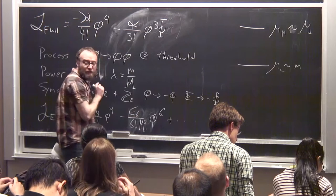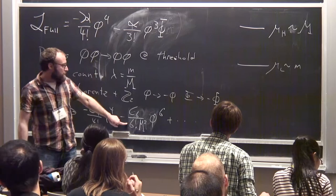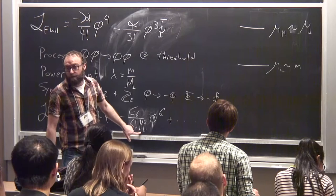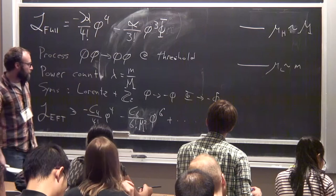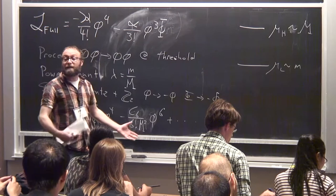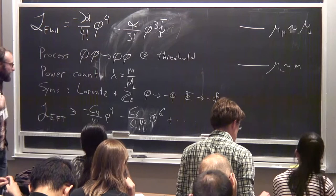The idea is that we're going to match our full theory to the effective theory at some mu high, which has a natural scale of order M, and then run down to mu low, which has a natural scale of order little m. Since the matching is happening at the highest scale in the theory, that's the mass scale we use to make everything dimension four. The point of matching this way is that when we match at mu high, we generate something which is just a pure number and coupling constants divided by M squared.